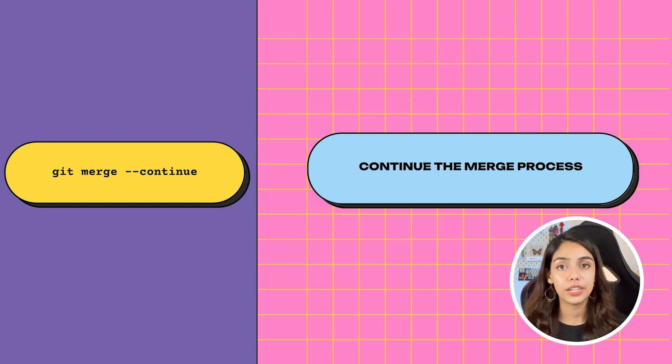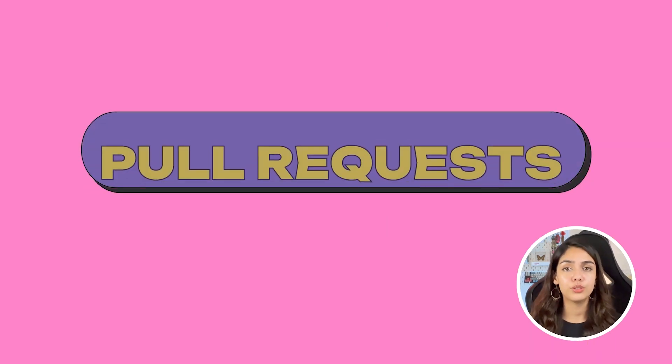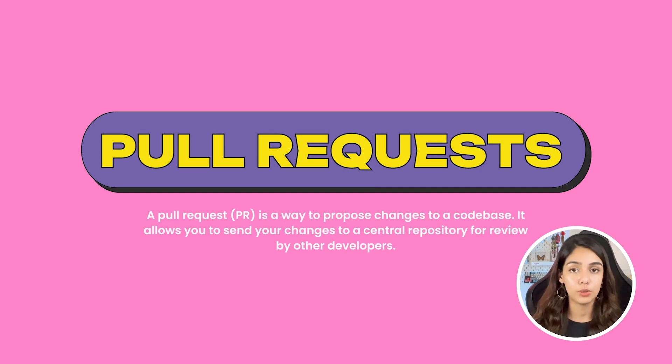You can use the git merge command to merge two branches locally. However, you use pull requests to merge two branches on GitHub. Let's see how it works.